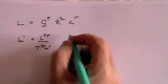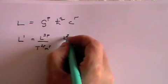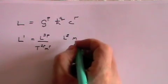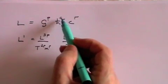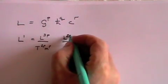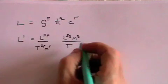h-bar had dimensions l squared m divided by t, but all of that has to be raised to the power q, so this is now l to the 2q, m to the q, t to the minus q.